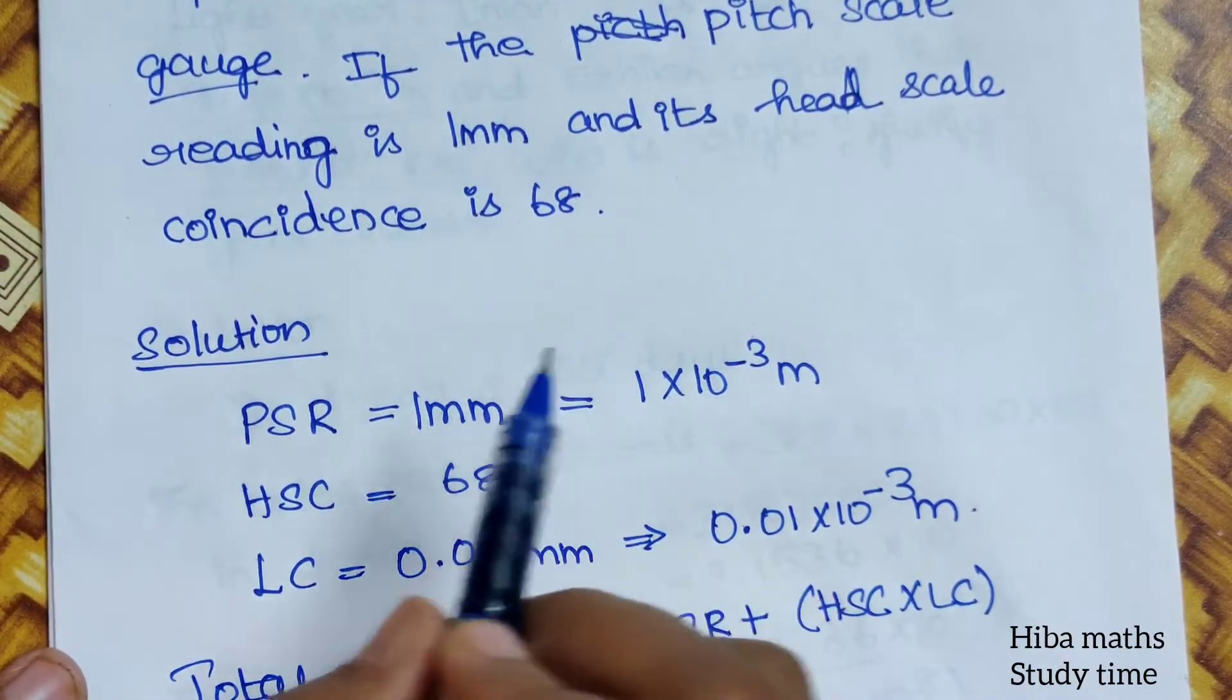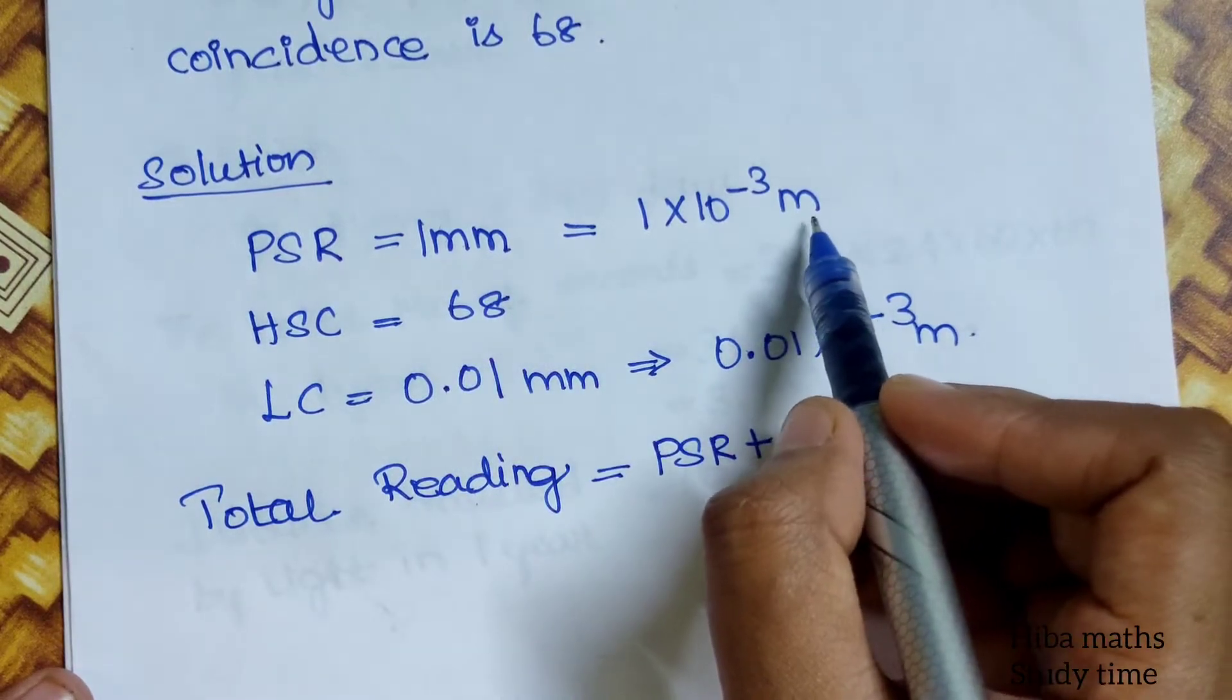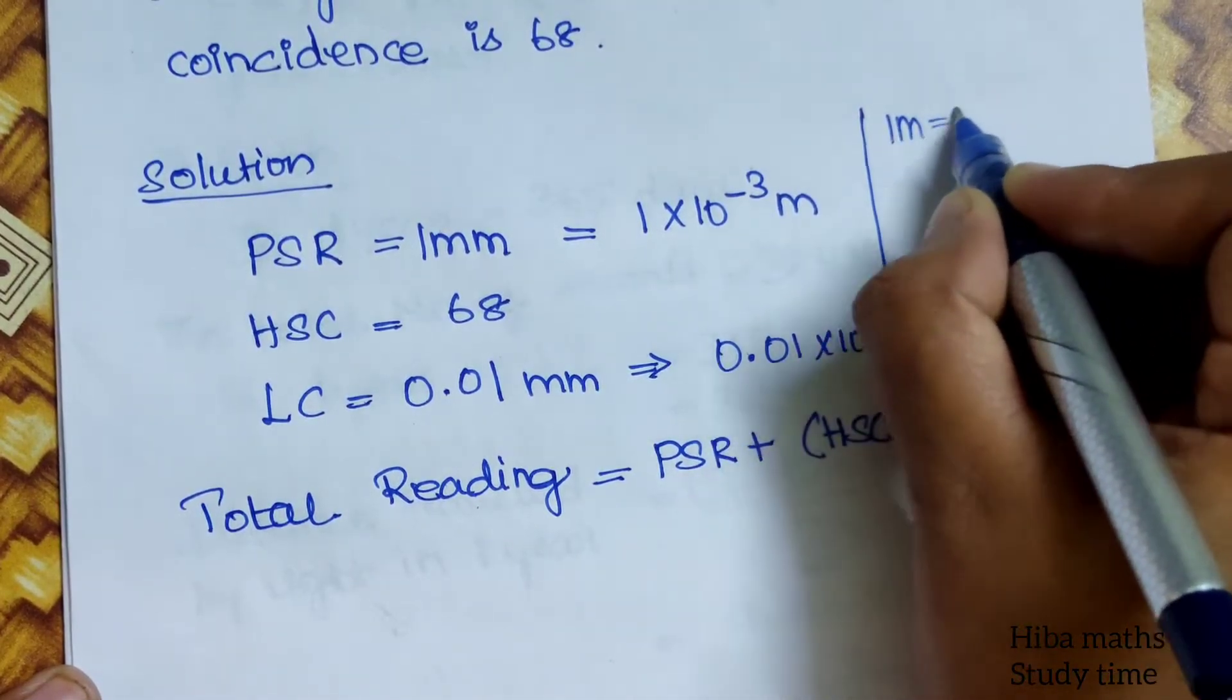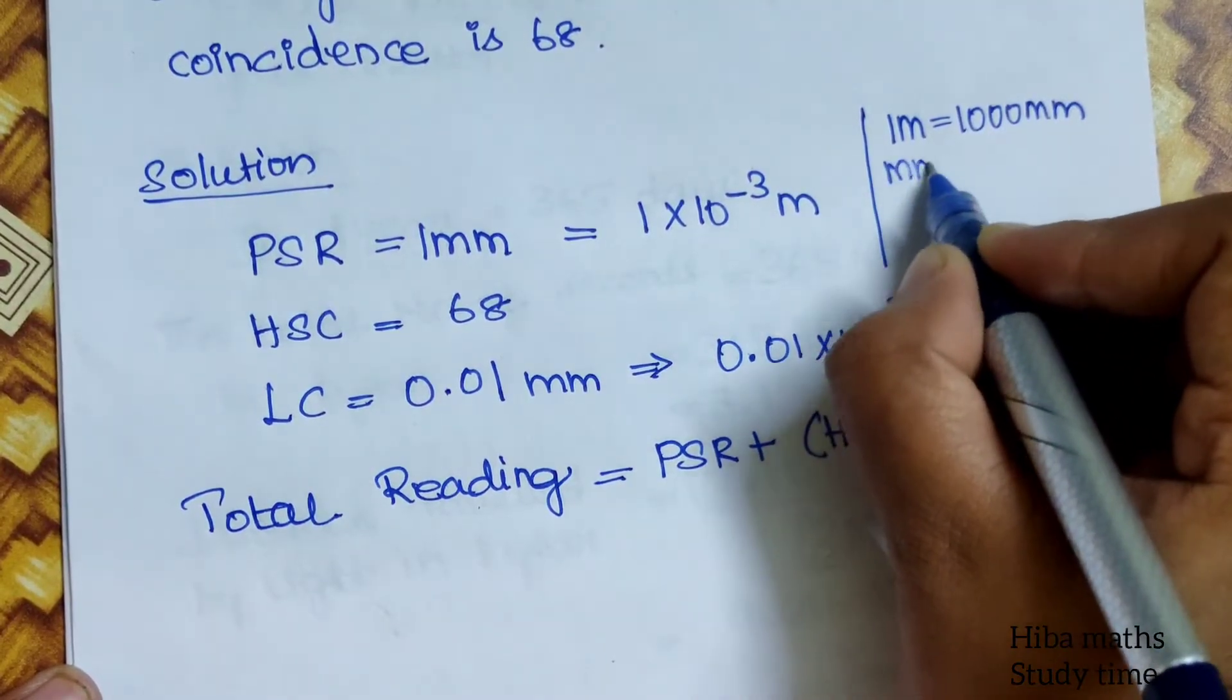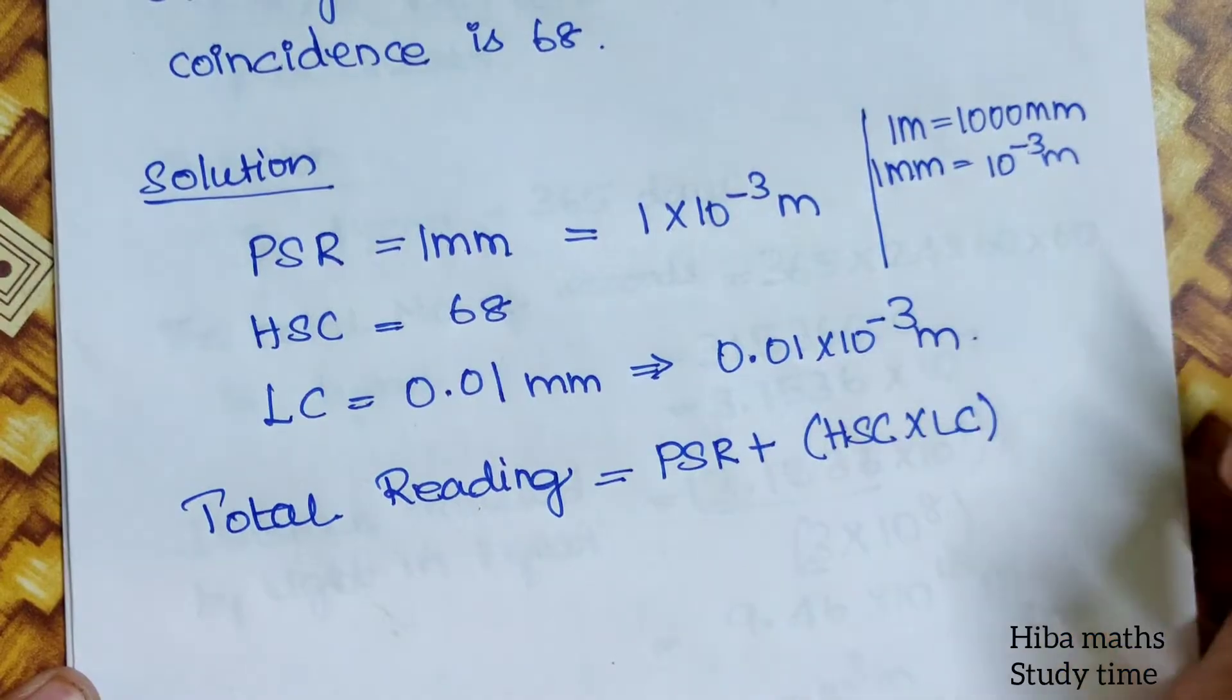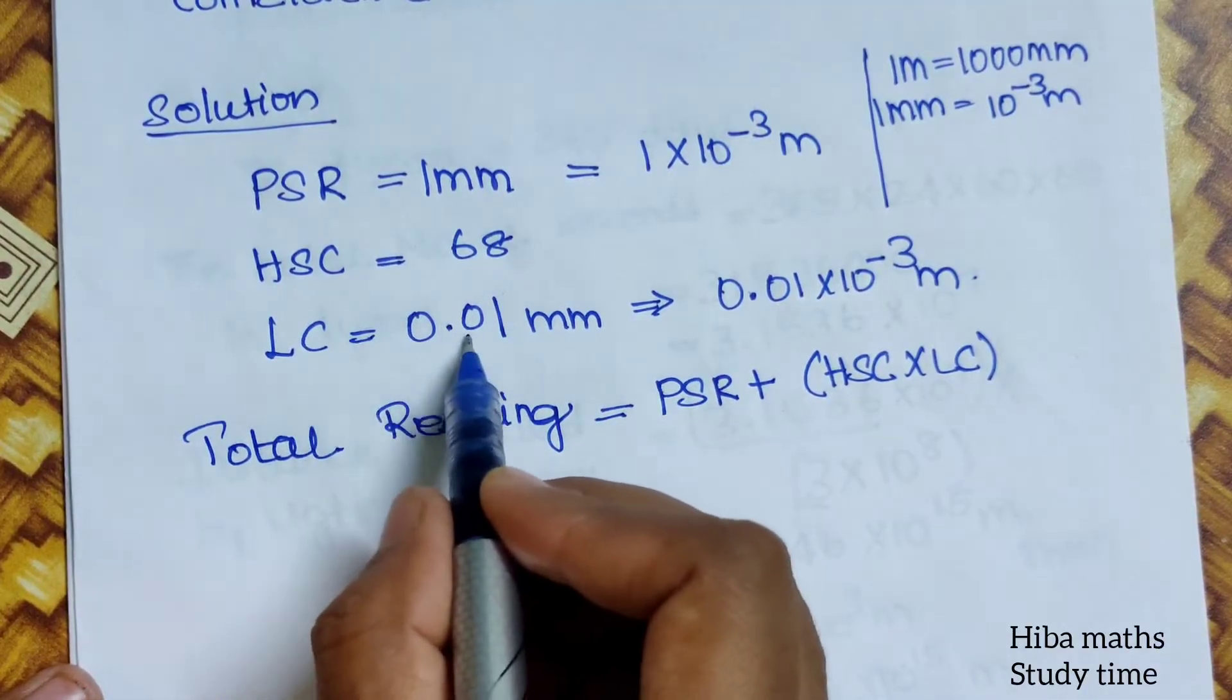This is the thickness of a 5 rupee coin. In the solution, PSR pitch scale reading is 1 mm. So I use 1 mm. How much? 1 times 10 power minus 3. 1 m is equal to 1000 mm. So 1 mm is 1000 divided, so 10 power 3 is equal to minus 3. So you can see the head scale reading is 68.